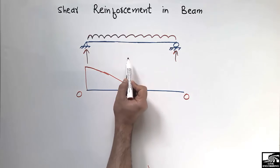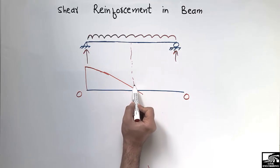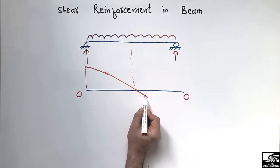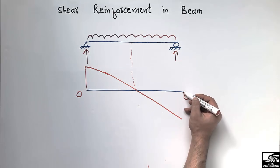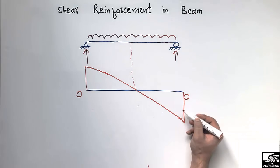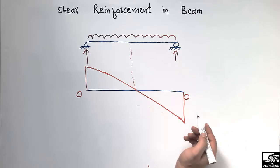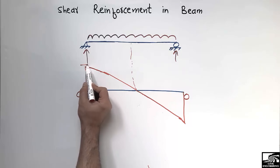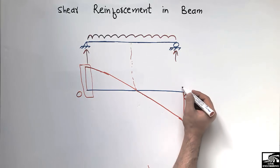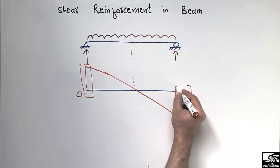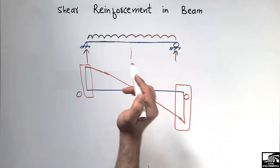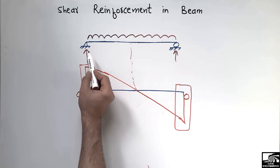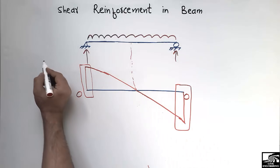At the midpoint of the beam, the shear force becomes zero. It then moves downward again due to the downward load, and becomes maximum again at the other end due to the support reaction. So we see that the shear force is maximum at both ends of the beam because of the two support reactions.